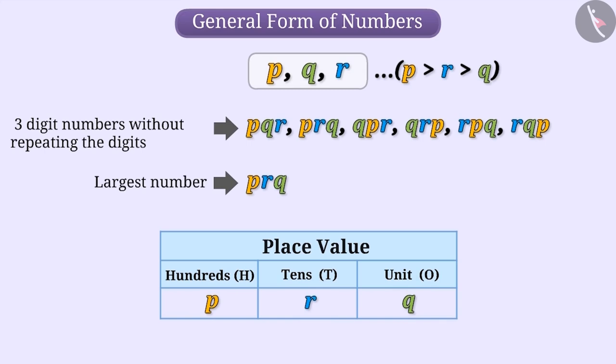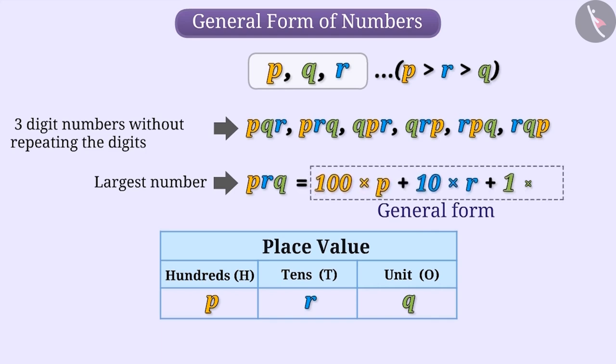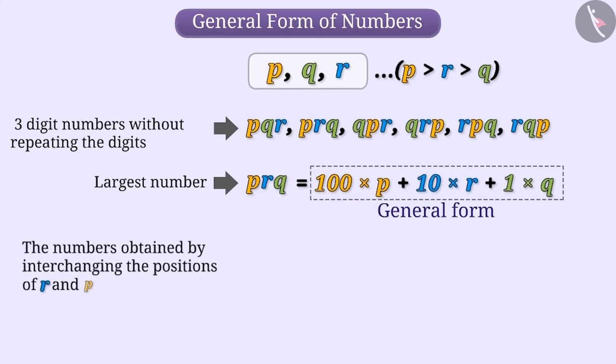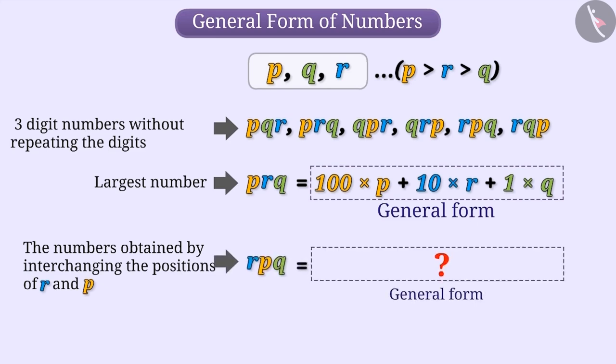Can you guess how to write this number in its general form? It will be written as 100 × P + 10 × R + 1 × Q. Suppose we interchange the positions of R and P. What will be the general form of the number RPQ thus obtained? Think for a while. We can write its general form in this way: 100 × R + 10 × P + 1 × Q.